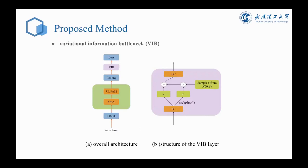On the left is the overall architecture of the model, and we add variational information bottleneck after the pooling layer. During the training process, the VIB forces the model to forget information in utterance-level features that's irrelevant to the speaker identity. It's implemented with the help of the reparametric method, as shown in the figure on the right.